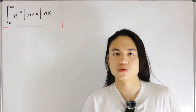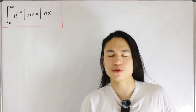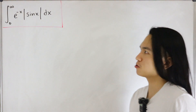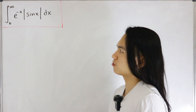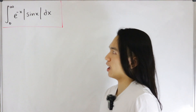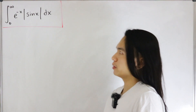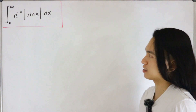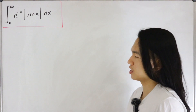So we have an interesting improper integral from 0 to infinity of e to the negative x multiplied by the absolute value of sine of x dx.